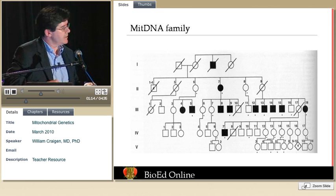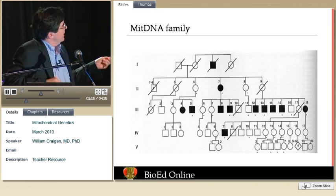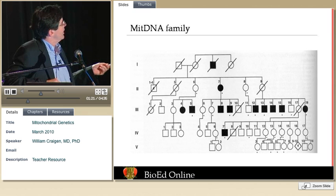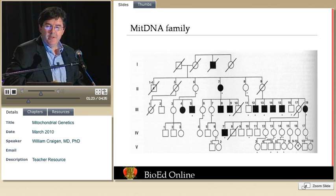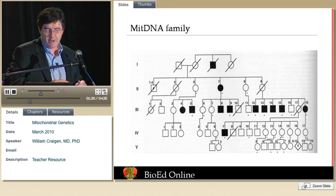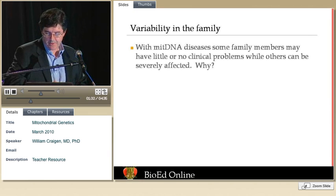When we look at this pedigree, we see a lot of individuals who are clinically affected. We see that only females pass on the condition — males and females are often equally affected, but males don't pass it on to any of their offspring. This is the hallmark of a mitochondrial DNA mutation.